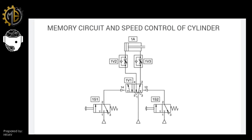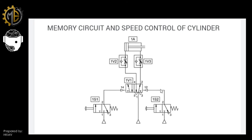The last example is what we call a memory circuit with speed control. A memory circuit is what we created earlier — when a directional valve without spring return is used, it remembers the last signal sent. For example, pressing switch one moves the final control element to its left position and it will not move again until another signal from switch two returns it to its original position. That is why it is called a memory circuit.